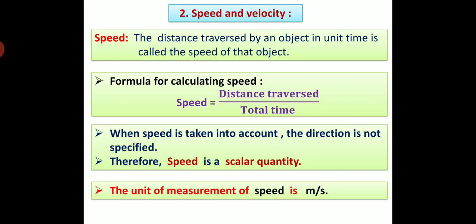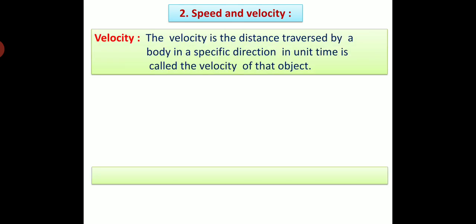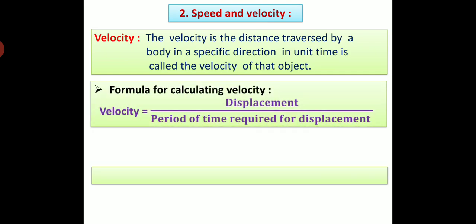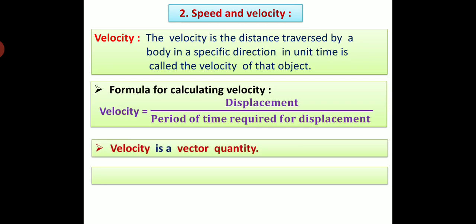The unit of measurement of speed is meter per second. Velocity: The distance traversed by a body in a specific direction in unit time is called the velocity of that object. The formula for calculating velocity is: velocity equals displacement divided by the period of time required for displacement. Velocity is a vector quantity, and the unit of measurement of velocity is meter per second.